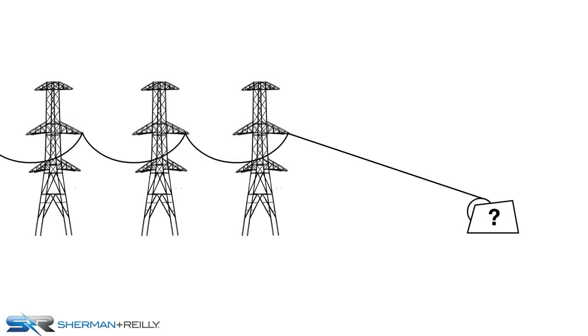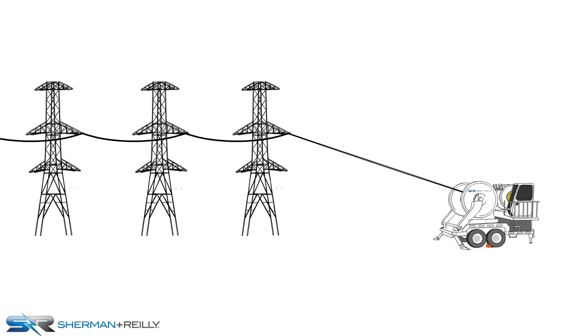All these factors come into play when determining the correct size puller and tensioner required for the project. Pulling force and tension force are maintained on the conductor to keep it at the desired installation sag. This will determine what size piece of equipment you need. A large, heavy conductor over a long pull, like a transmission job, will require more pulling force and more tensioning force.